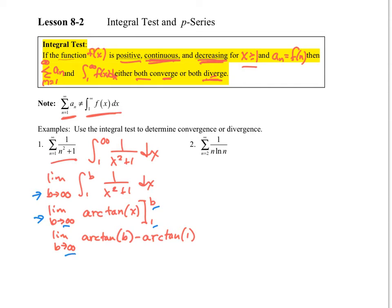The arctan as b goes to infinity is pi over 2. The arctan of 1 is pi over 4. This is equal to pi over 4.